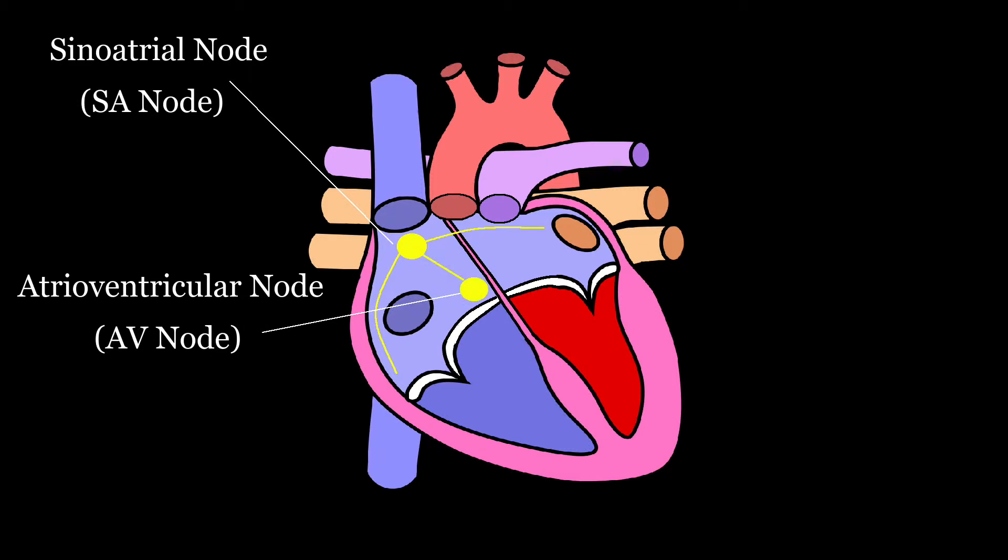The impulse continues through the bundle of His and then divides into right and left pathways, also called the bundle branches.